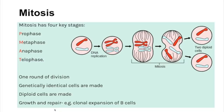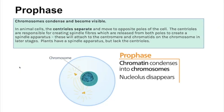Mitosis is split into four key stages — PMAT: prophase, metaphase, anaphase, and telophase. Key facts: it's only one round of division, genetically identical diploid cells are created, and it is used for growth and repair — for example, the clonal expansion of B cells. In prophase, chromosomes condense and become visible; in animal cells, pairs of centrioles move to opposite poles and create spindle fibres which will attach to the centromere and chromatids. Plants have a spindle apparatus but no centrioles.